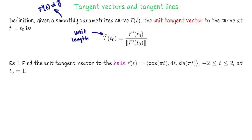We've seen that hat symbol before — we use the hat symbol over T to indicate that this is a unit length vector, which we expect by definition because we're taking the tangent velocity vector and dividing it by its own magnitude, i.e., dividing it by the speed. So the unit tangent vector is going to be parallel to R', so it is indeed tangent, and of course it's unit length because we're taking R' and dividing it by its own magnitude.